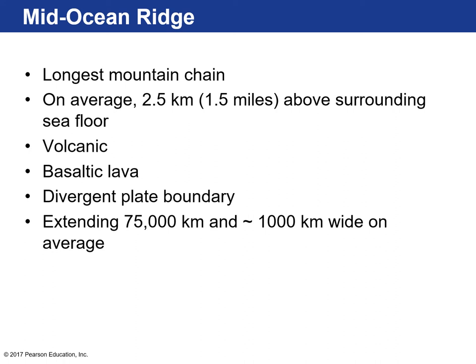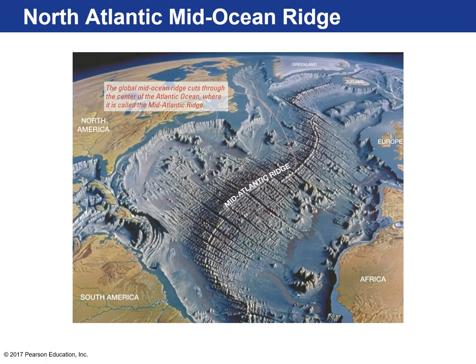Let's move on to the last province: the mid-ocean ridge province. These are the longest mountain chains found on Earth. On average, they're about 2.5 kilometers above the surrounding seafloor. They're volcanic in origin — eruptions are basaltic lavas that spew out from open rifted areas, forming pillow basalts. These form as a result of two plates moving away from each other at a divergent plate boundary, and can be approximately 1,000 kilometers wide on average and 75 kilometers long.